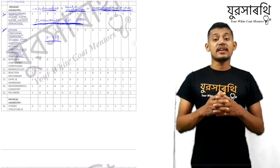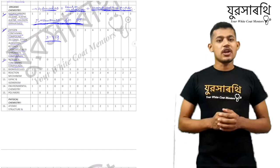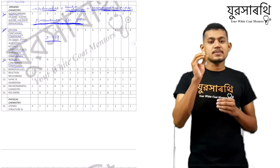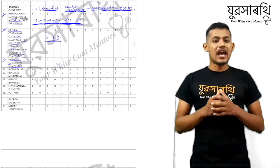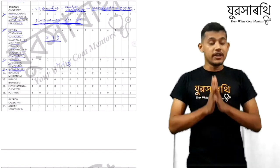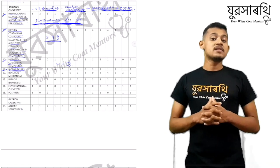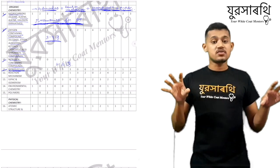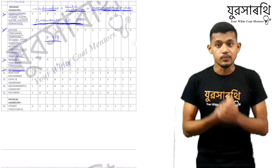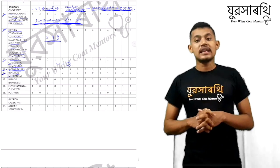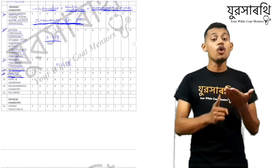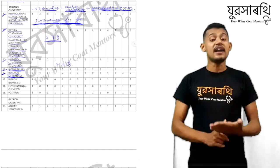Next after oxygen containing compounds, we have nitrogen containing compounds. It is a very small chapter compared to the other organic portions. You can read it in a short span of time and they ask almost one to two questions every year. After nitrogen containing compounds, we have biomolecules. An interesting fact is that biomolecules is present in biology as well as chemistry, so while studying it you can combine the approach of both subjects.